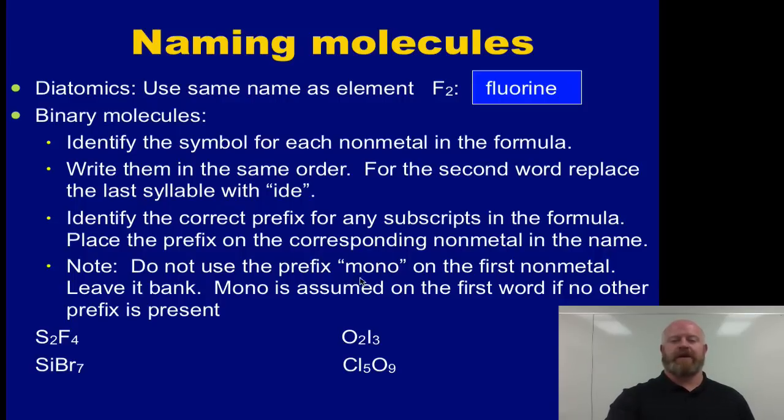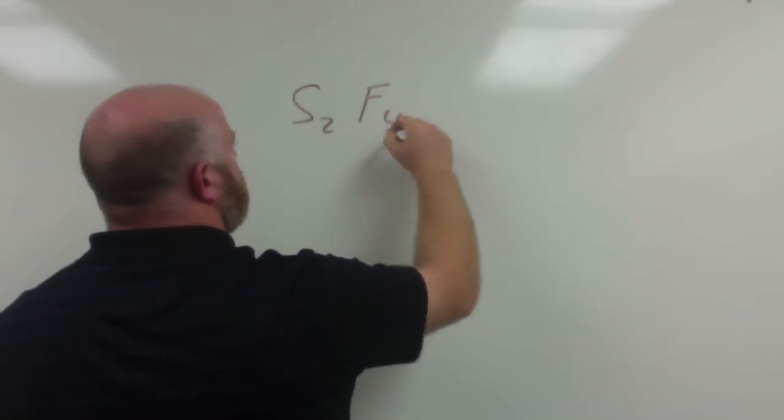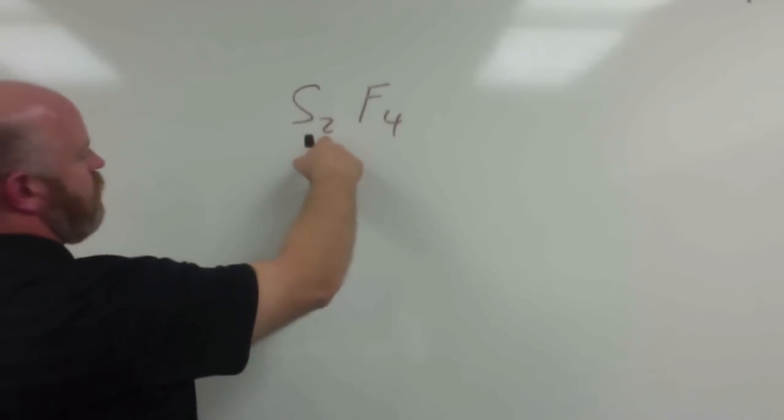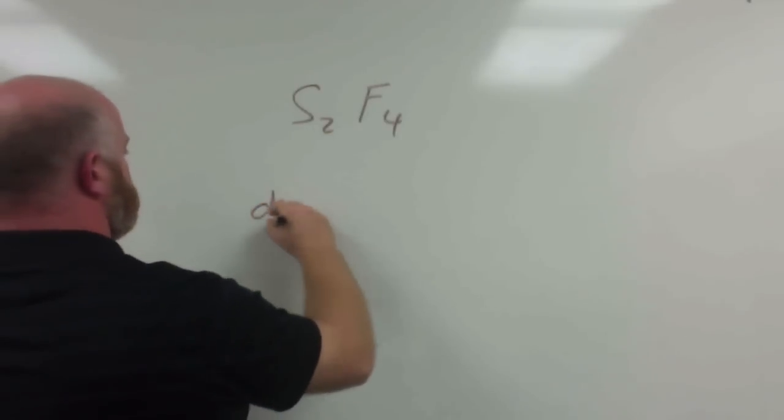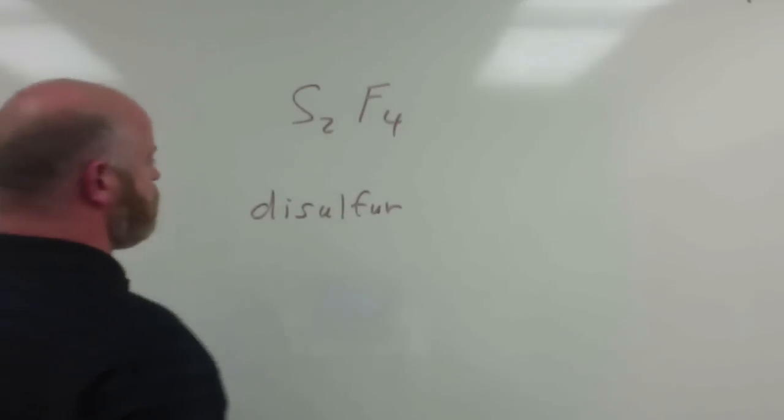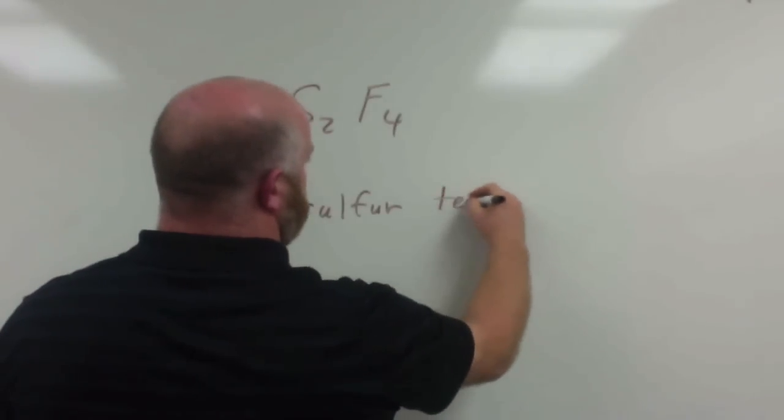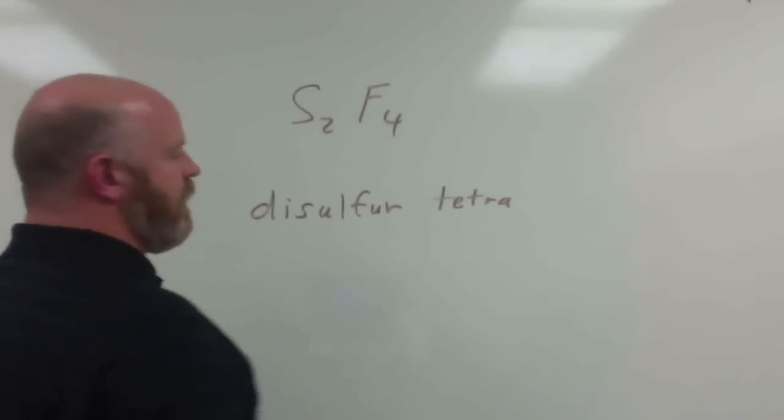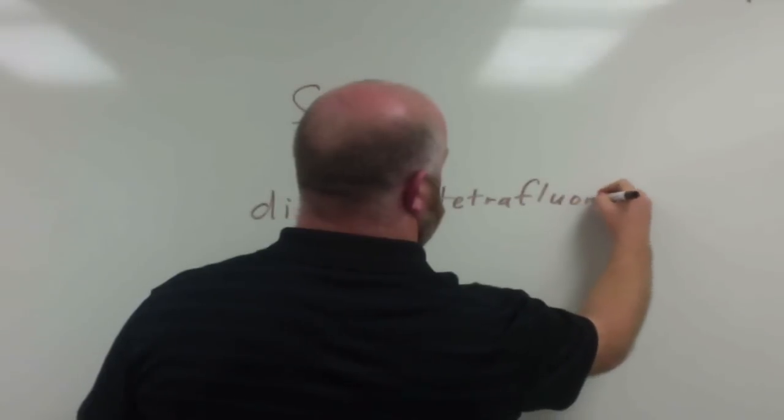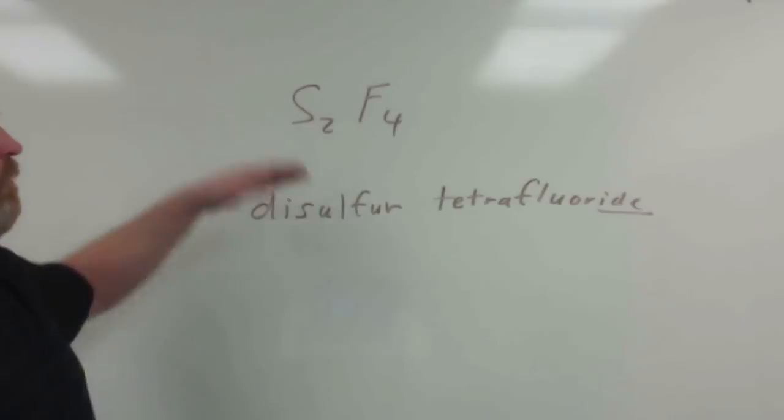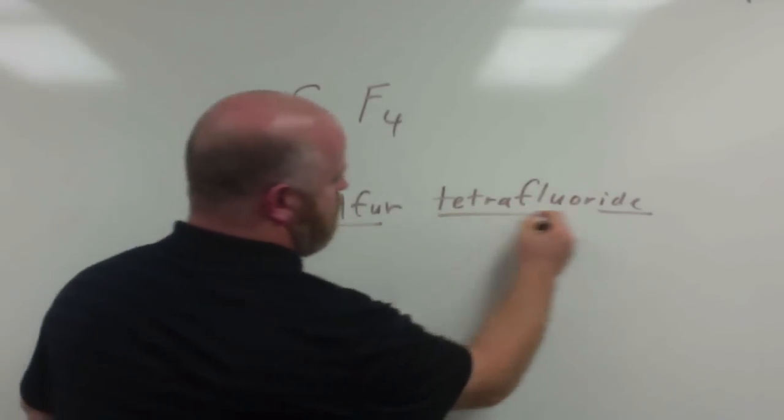A couple things to note, we don't use the mono prefix on the first nonmetal. If it's on the second one we do, but for the first word we don't use mono ever. It's just assumed to be there if we have that. So let's do a couple examples on the board here to see how that would work. So let's start with S2F4. S is sulfur and we have two of those. So the prefix for two is di, so we would call this disulfur. Notice how we do not capitalize it because these are not proper nouns. And then we have four fluorines, so that would be a tetra. And fluorine we change to fluoride, so it would be tetrafluoride. So S2F4 we would call disulfur, all one word, space tetrafluoride.